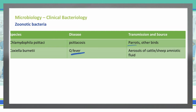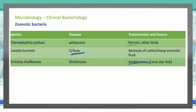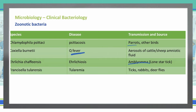Ehrlichia chaffeensis causes ehrlichiosis, and this comes from Amblyomma, which is the lone star tick — a particular type of tick that carries ehrlichiosis. Francisella tularensis — the name tularensis helps you understand the disease it causes, which is tularemia. This comes from ticks, rabbits, and deer flies.